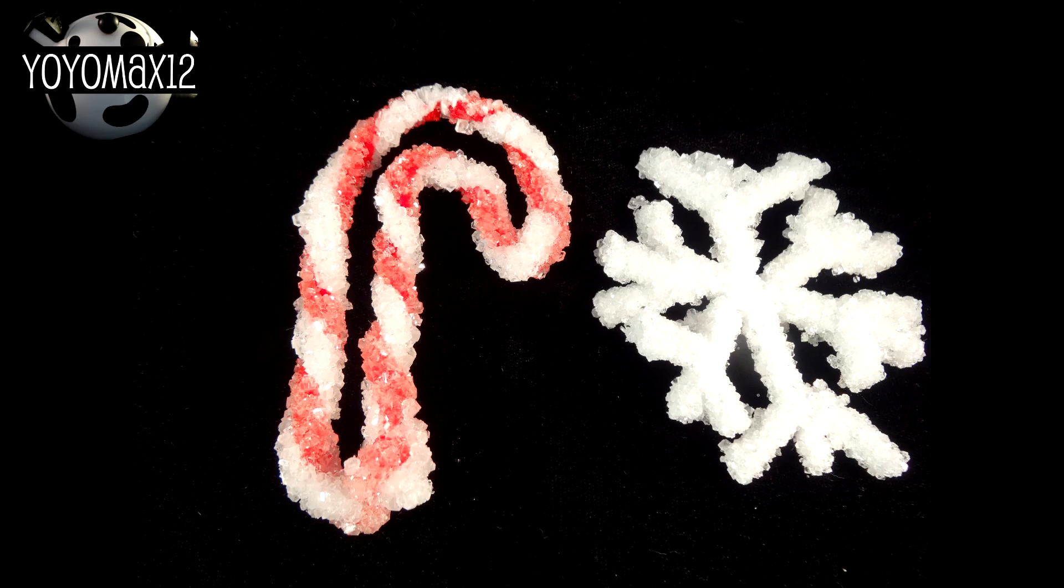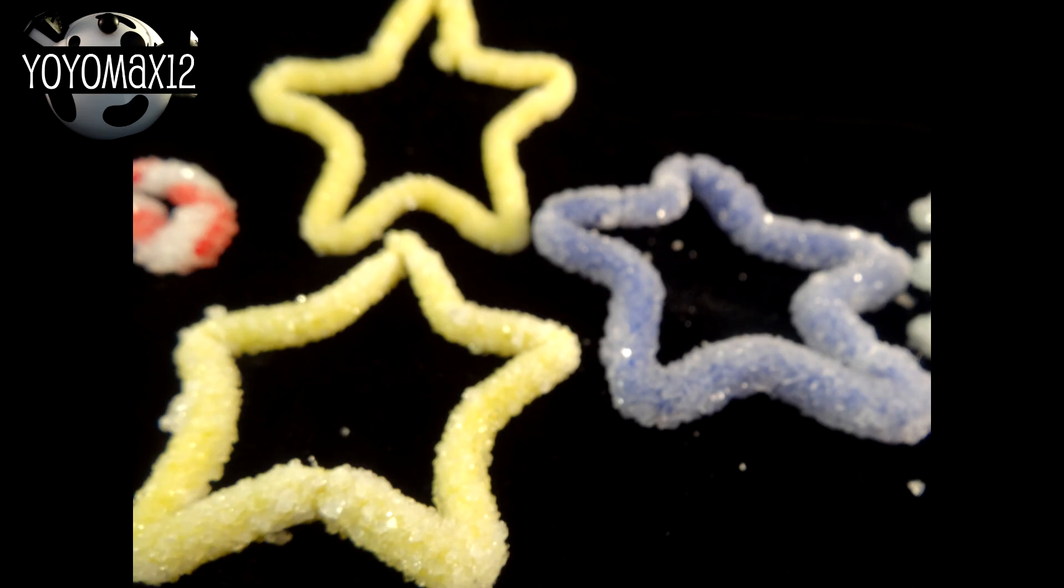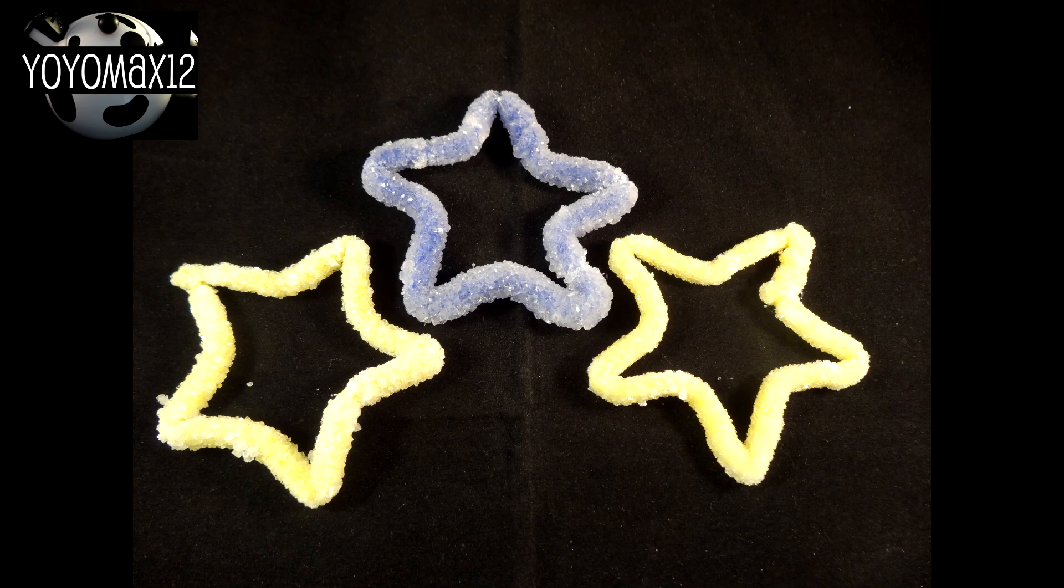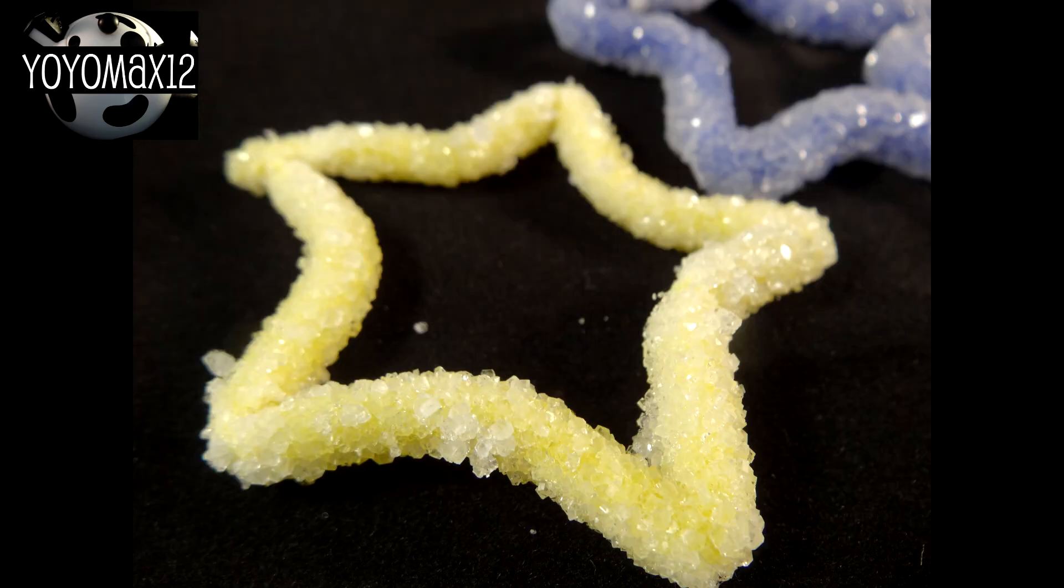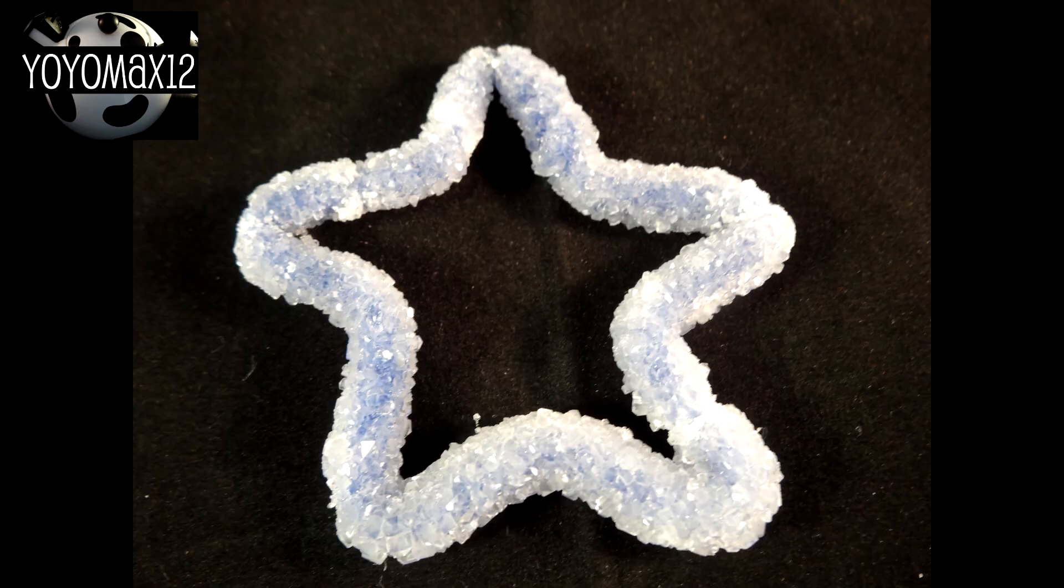And here they are completed, candy cane, snowflake. These are super sparkly. It's hard really to tell by looking at photos and it's hard to get that sparkle in a photograph, but they really are sparkly. Now this one, this yellow one, was about four hours and the blue one was overnight, so you can see that it's a bit thicker than the other ones.